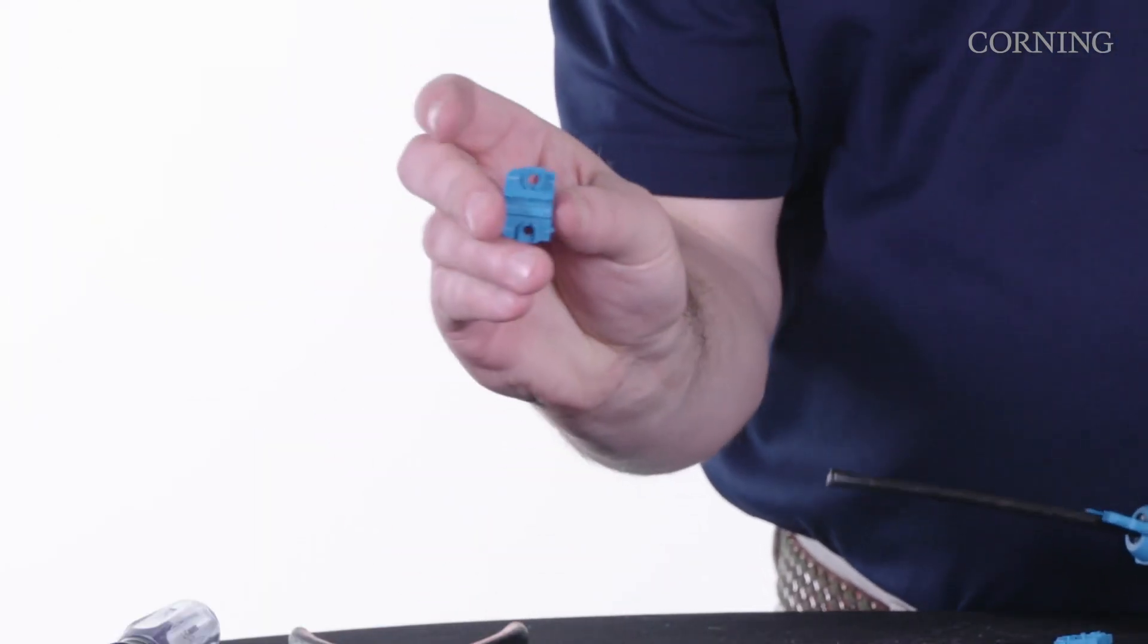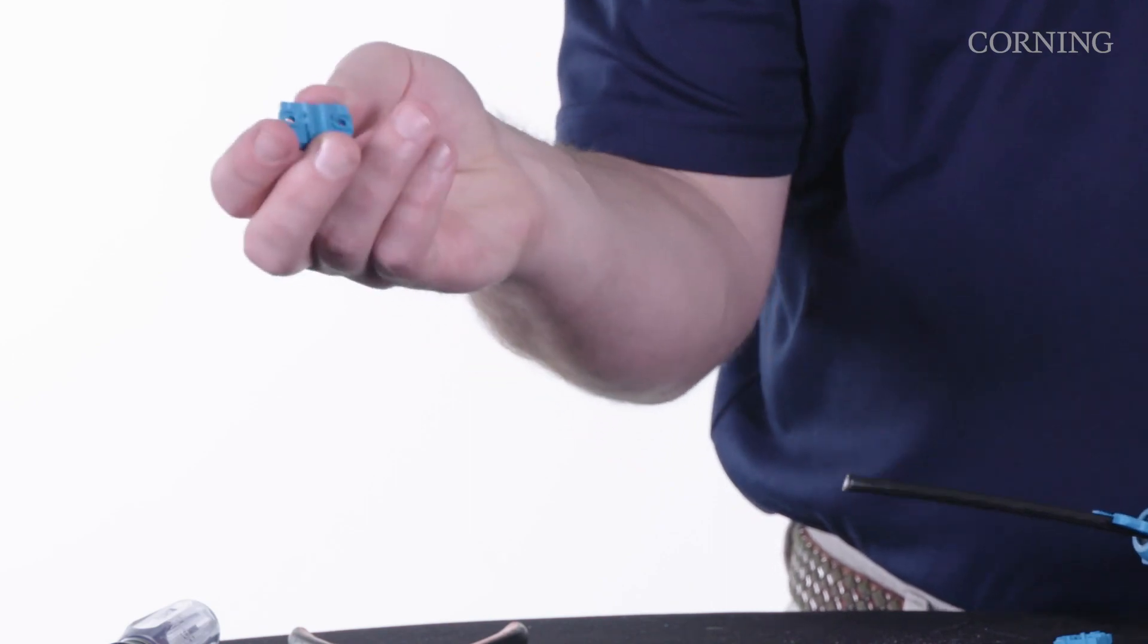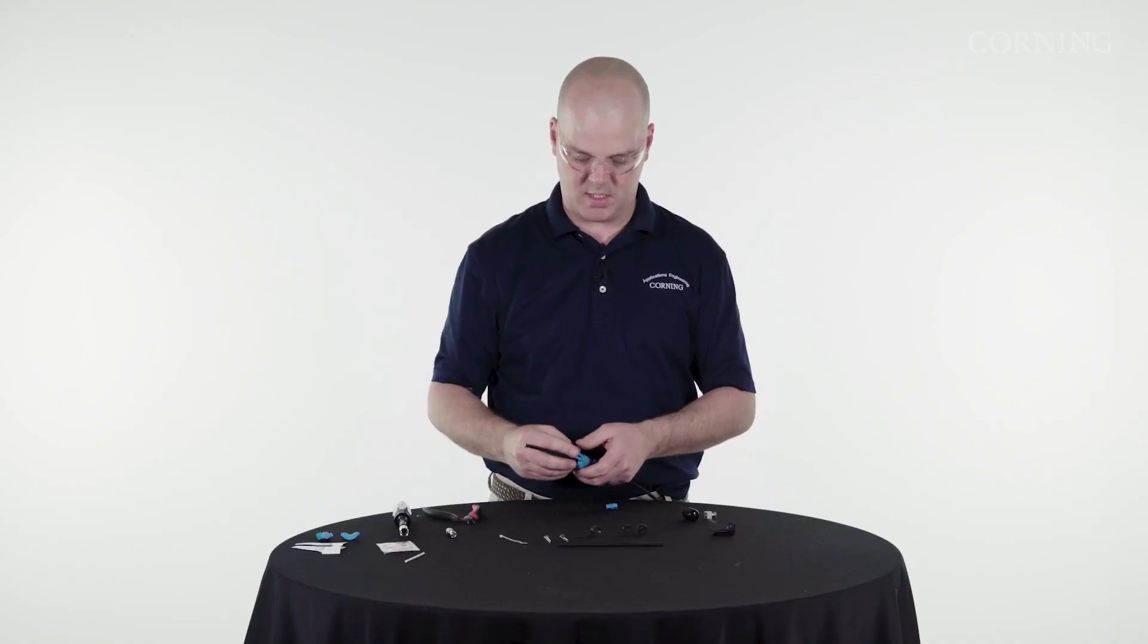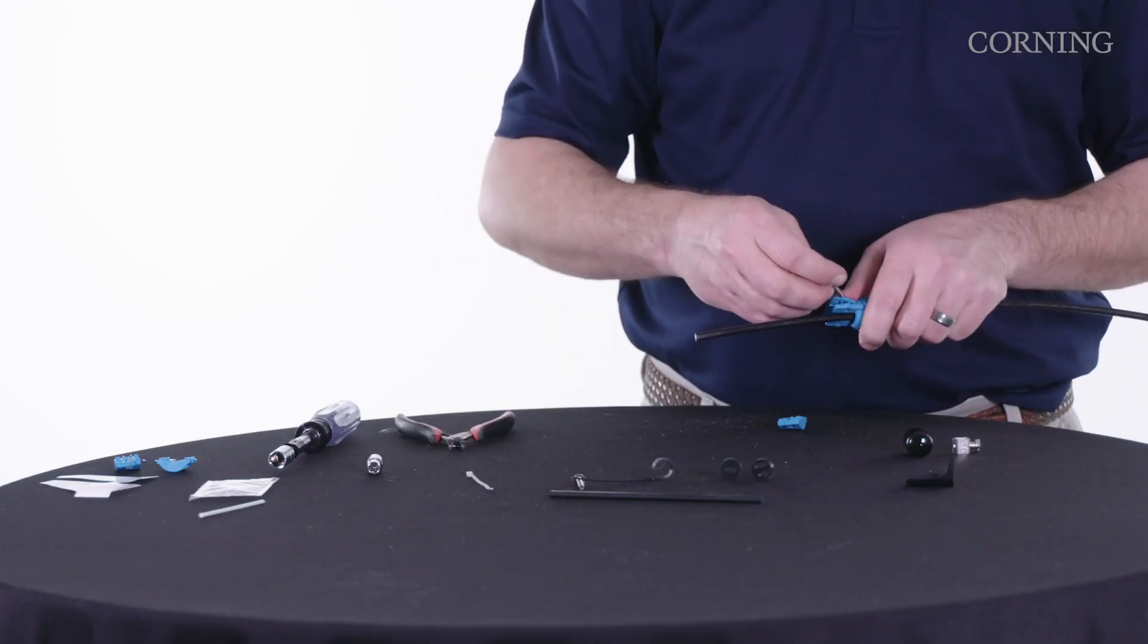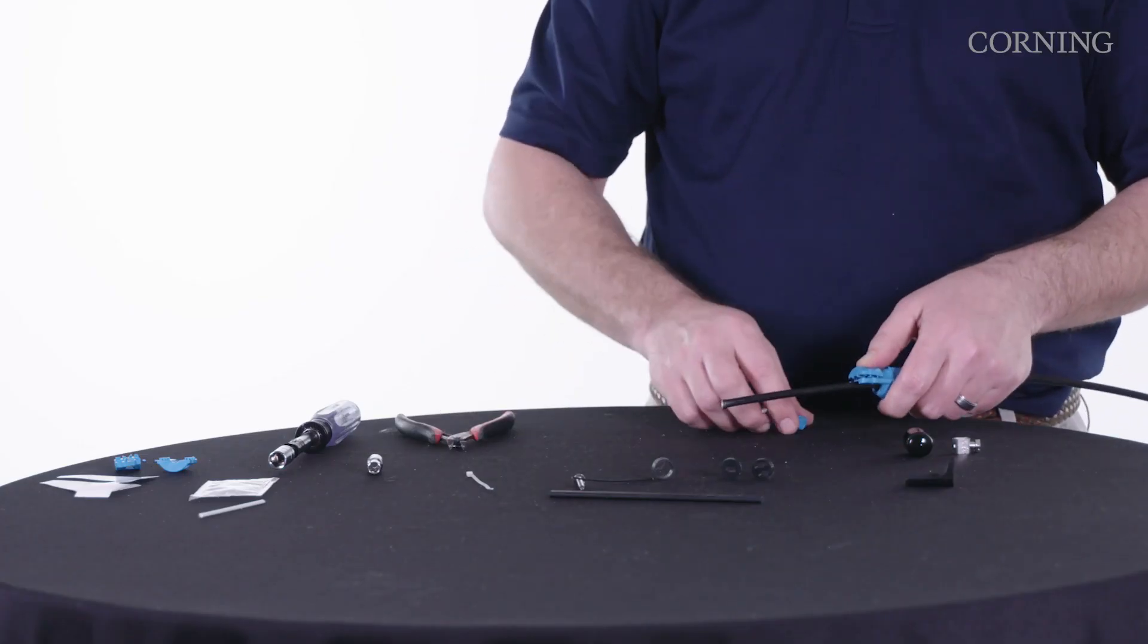Now, these have a rounded end and a square end. The square end goes up against the closure, or up against the e-cam, rounded end goes out.